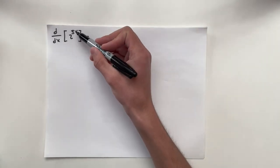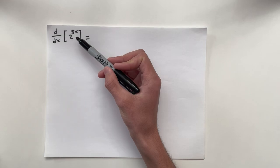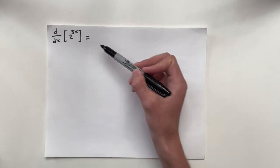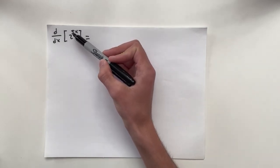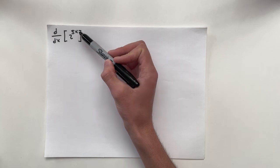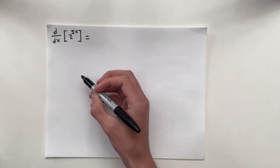The derivative of 2 to the 3x. So just by looking at this, it can be a bit daunting, just because we're not really used to having a base other than e. But I'm going to show you how to differentiate this, and it'll be really easy.